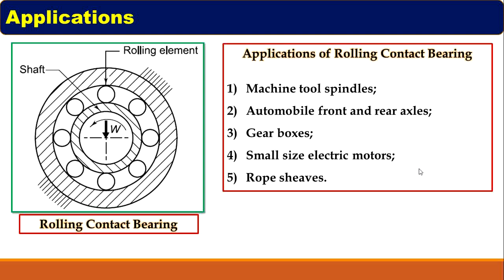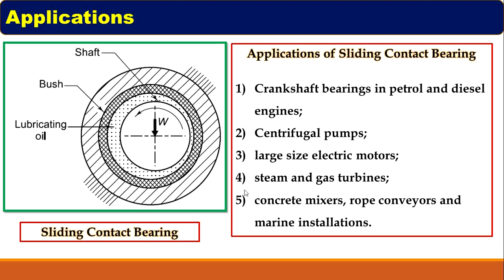Applications of rolling contact bearing: first, machine tool spindles; second, automobile front and rear axles; third, gearboxes; fourth, small size electric motors; and fifth, roof shoes. Applications of sliding contact bearing: first, crankshaft bearings in petrol and diesel engines; second, centrifugal pumps; third, large size electric motors; fourth, steam and gas turbines; and fifth, concrete mixers, rope conveyors and marine installations.